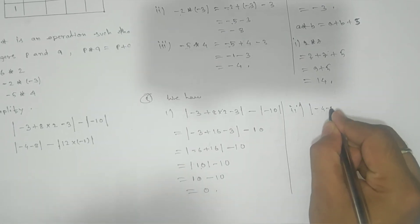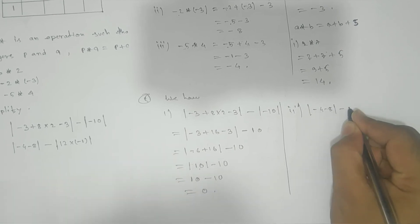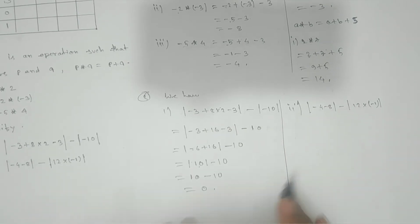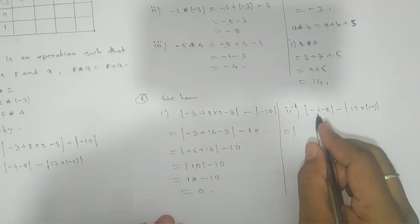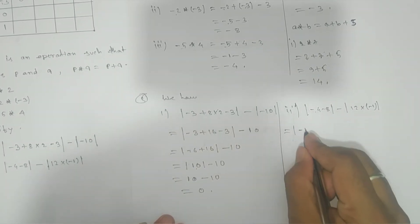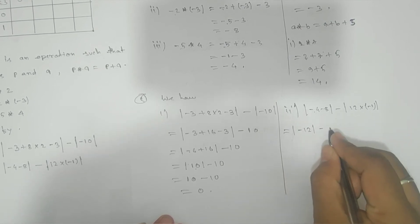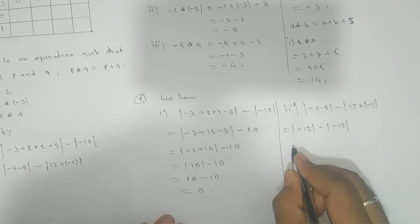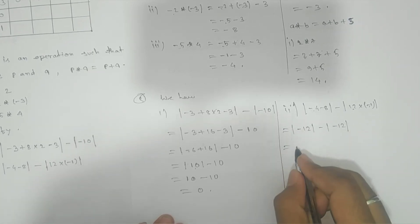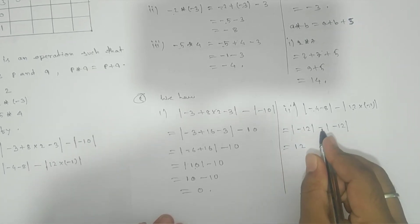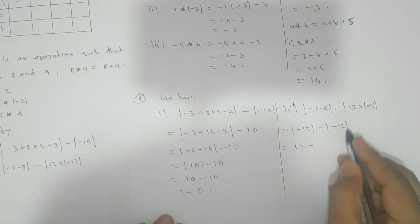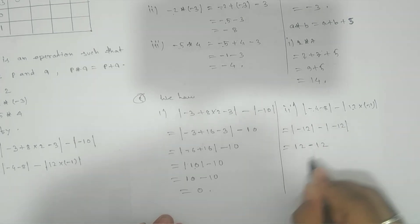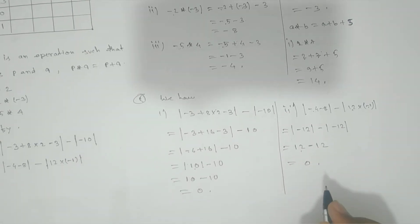Second expression: |minus 4 minus 8| minus |12 into minus 1|. Minus 4 minus 8 gives minus 12. Then 12 into minus 1 gives minus 12. Modulus of minus 12 is plus 12, and minus modulus of minus 12 is also plus 12. So 12 minus 12 gives 0.